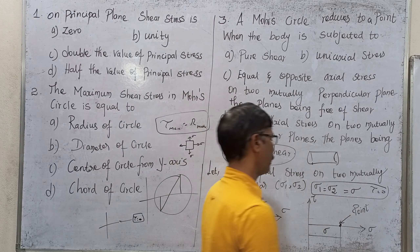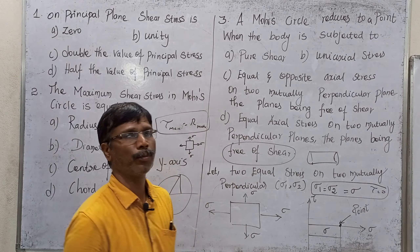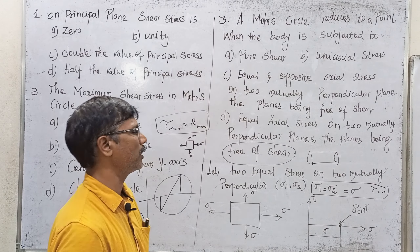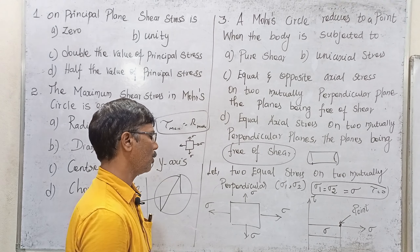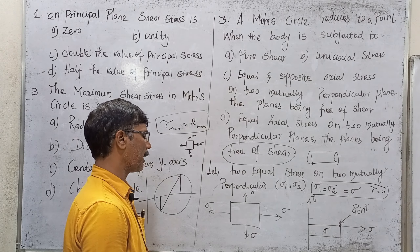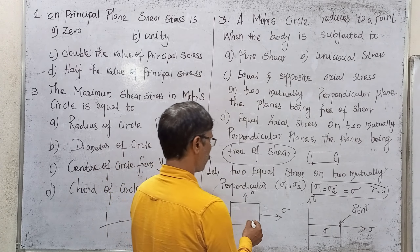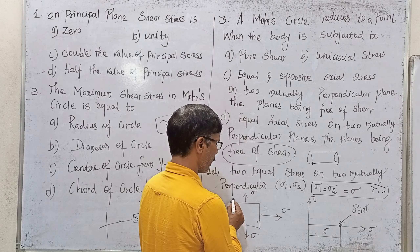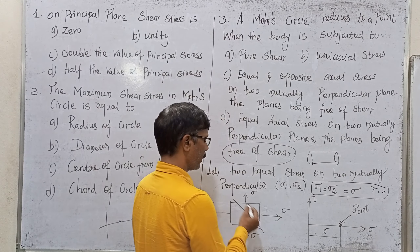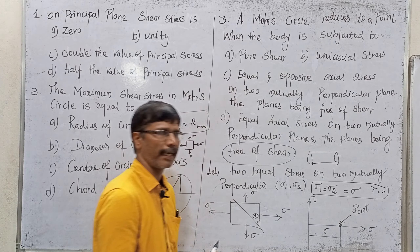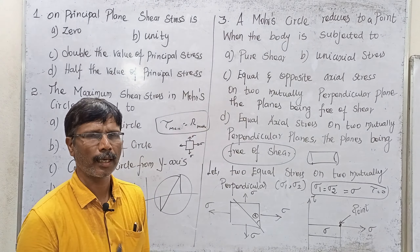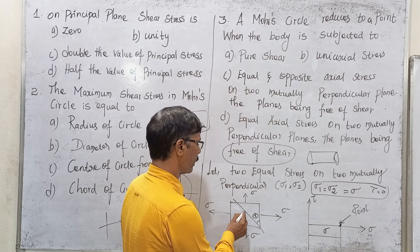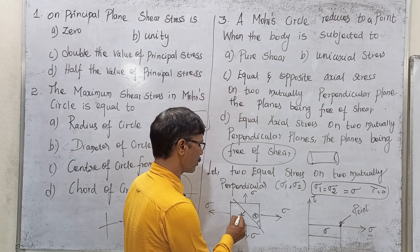This is one thing we have to understand. If we measure the angle theta — theta is 1 degree, 2 degree, 5 degree, 10 degree — they correspond to sigma values on the Mohr's circle.